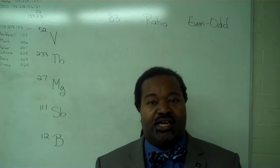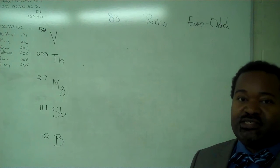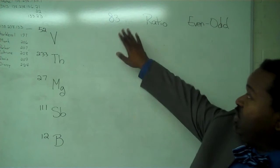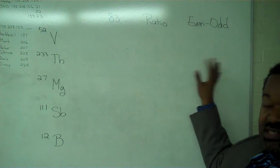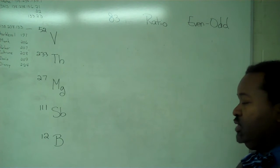This instructional video is designed to show you how to apply nuclear stability tests. We have the 83 test, the ratio test, and the even-odd test. And we have a list of five nuclei.